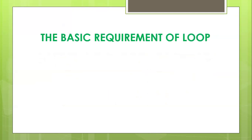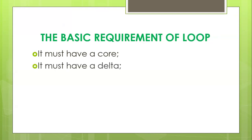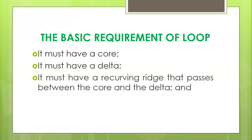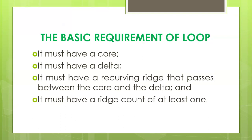Before we can say that it is a loop, there are requirements or requisites of a loop. First, it must have a core — the inner terminus. It must have a delta — the outer terminus, which we already discussed in determining the core and delta. It must have a recurving ridge that passes between the core and delta. And it must have a ridge count of at least one when you draw an imaginary line between the core and delta.